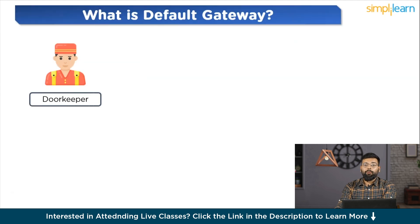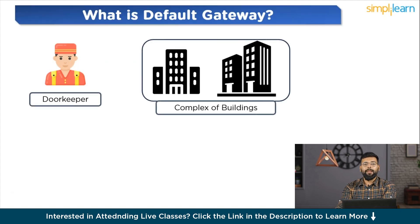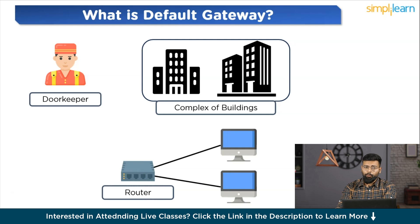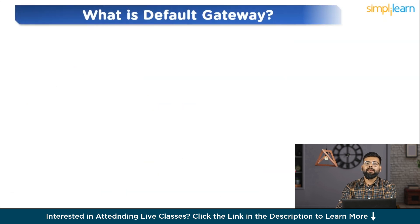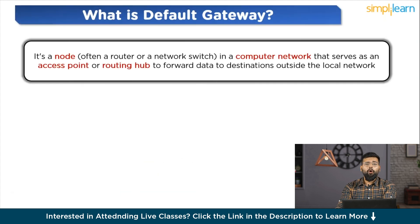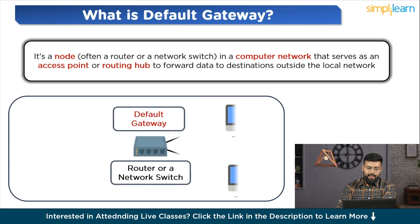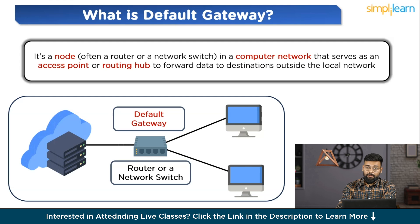Let's start with a simple definition of default gateway. A default gateway in networking is analogous to a doorkeeper or guide in a vast complex of buildings. It serves as the primary access point that a device in a network uses to interact with devices in other networks. Technically, it's a node — often a router or a network switch — that serves as an access point or routing hub to forward data to destinations outside the local network, as depicted in the diagram.